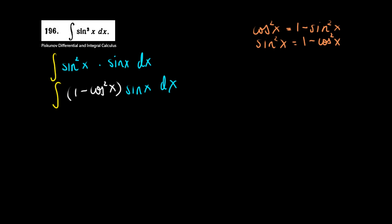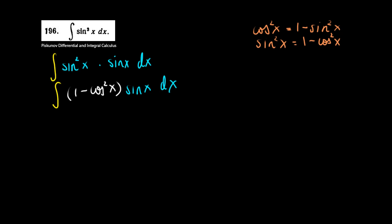Now I use the classic u-substitution. I'll substitute u to be cosine of x. Let me differentiate both sides. So du is minus sine of x dx. I think you see where we're going with this.